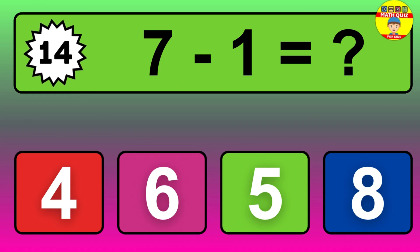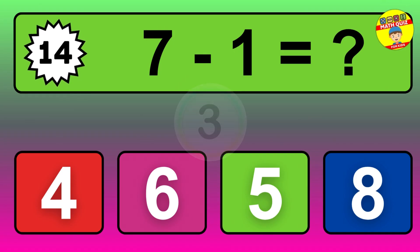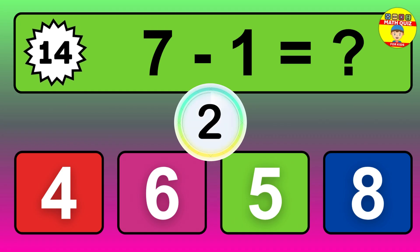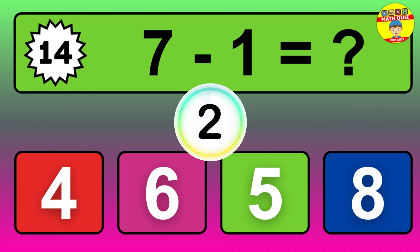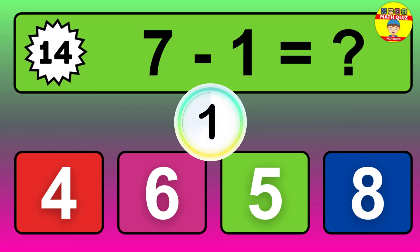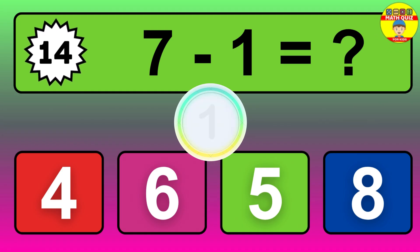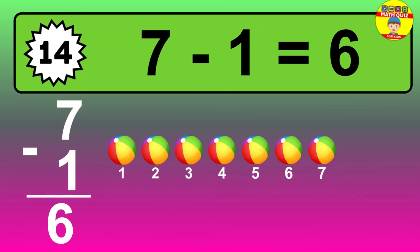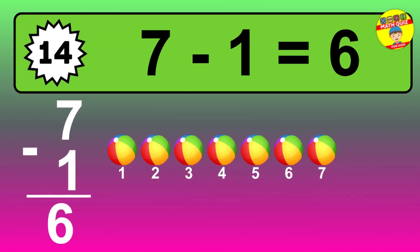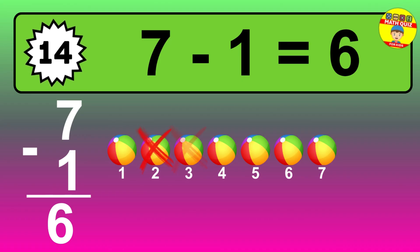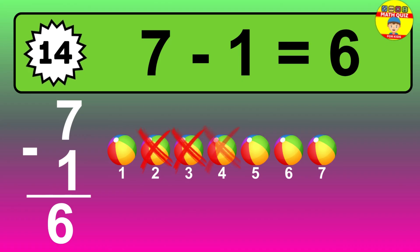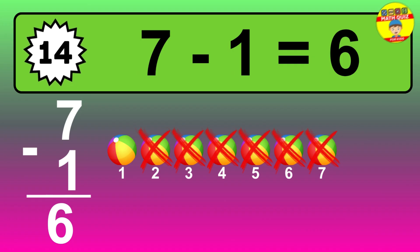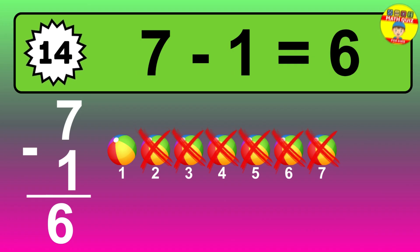Question 14. 7 minus 4 equals what? The answer is 7 minus 4 is 6. Let's count it: 1, 2, 3, 4, 5, 6.